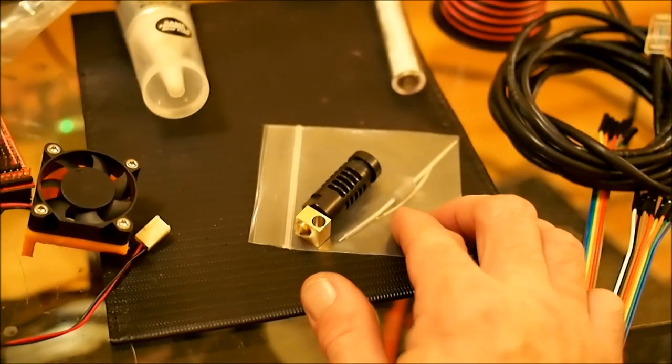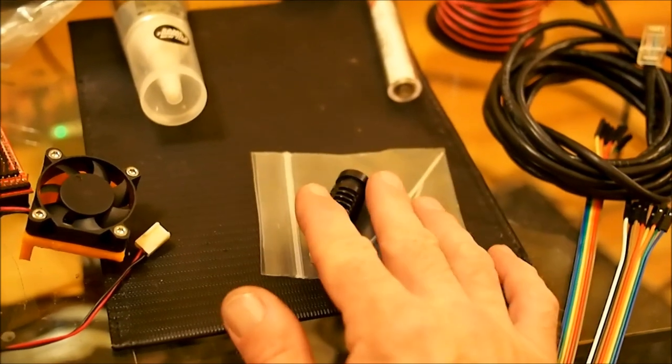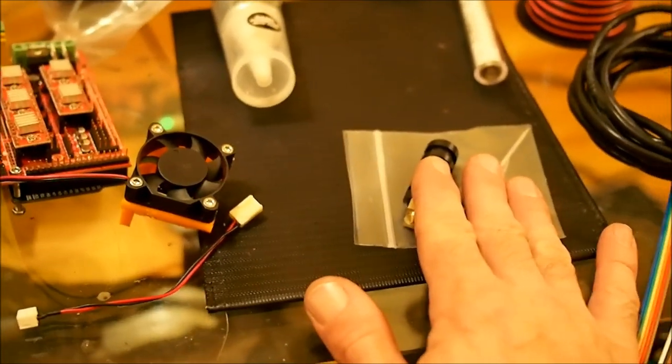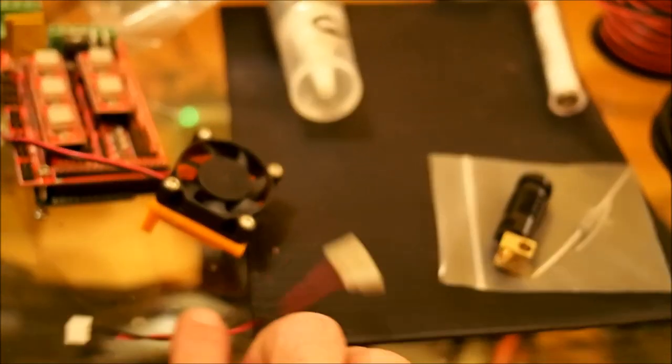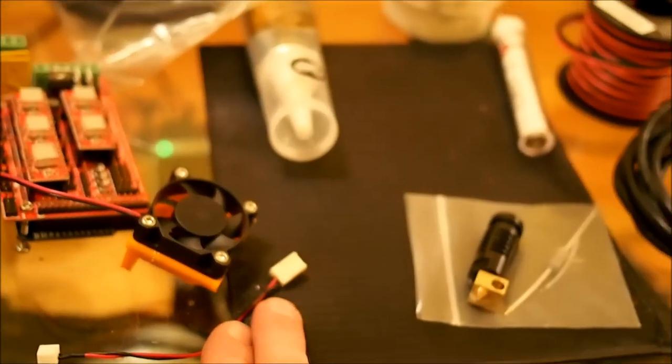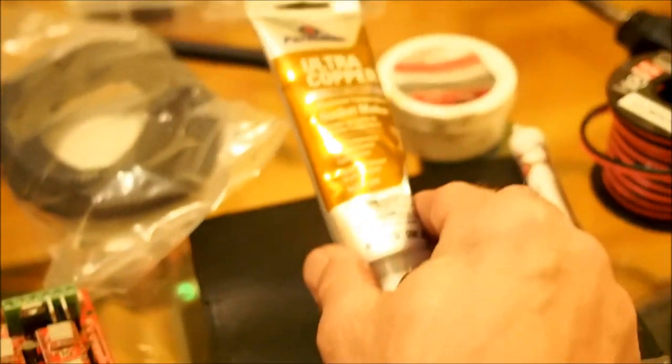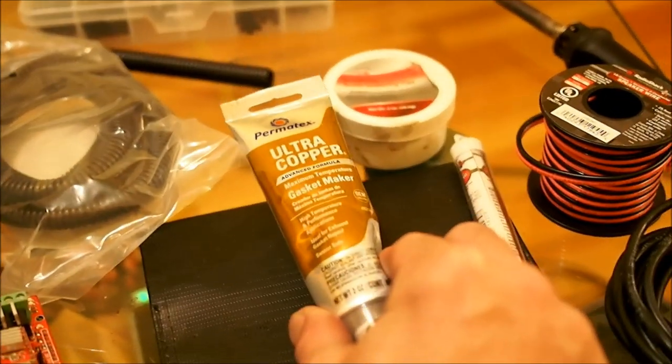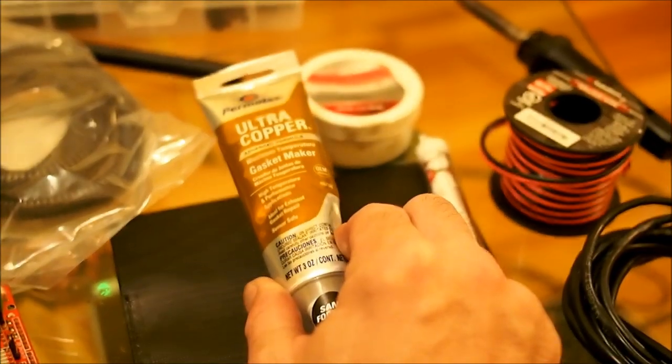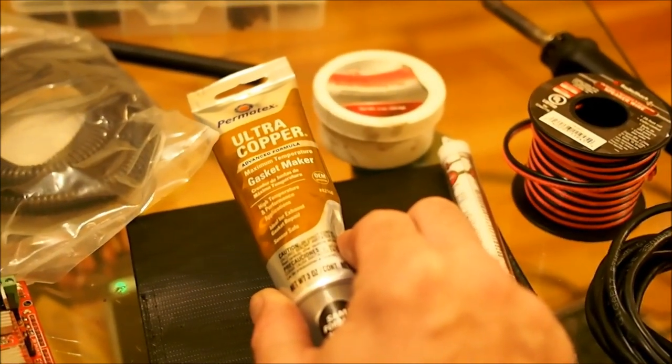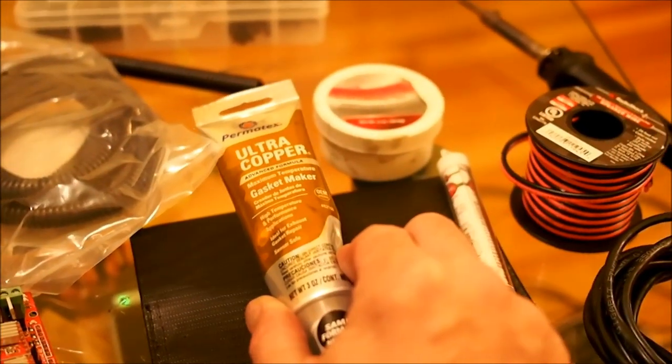It comes with the resistor, the thermistor and the Teflon tubing needed to put it together. But in addition, you need a 40mm fan. It comes with this little adapter here which will put to good use. I need some ultra copper RTV sealant. This actually is our heat sink compound that we're going to use to make sure that the resistor connects well to the heat sink of the hotend.